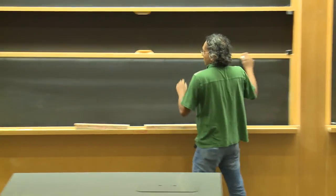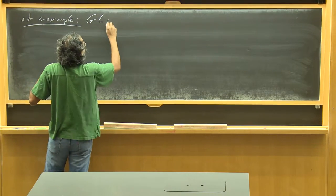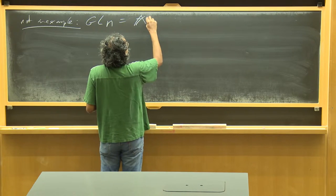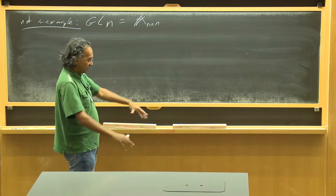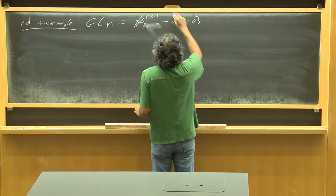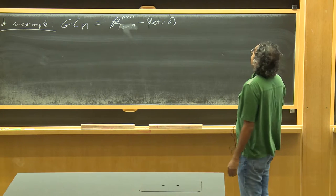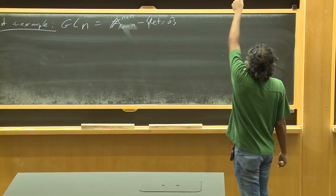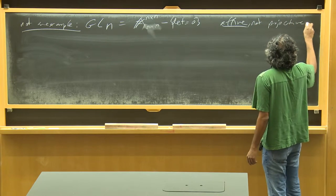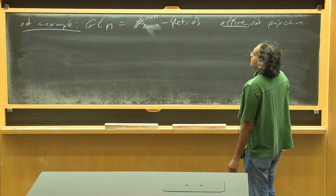Just to mention, a non-example would be something like the general linear group — the group of n by n invertible matrices. If you take the affine space of dimension n² and think of it as the space of n by n matrices, then take out the zero locus of the determinant, that gives you something with a group structure by matrix multiplication. But it's not commutative, so it can't fit this definition. And where it breaks down is: it's certainly smooth and connected, but it's not projective.